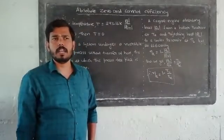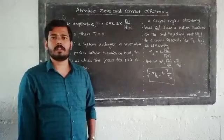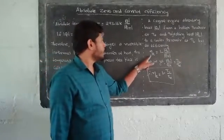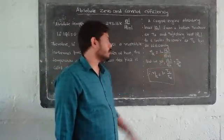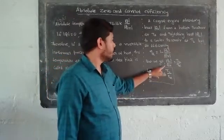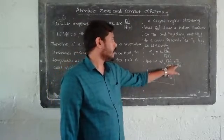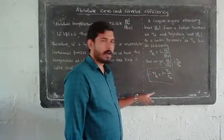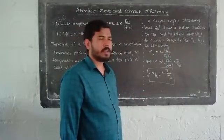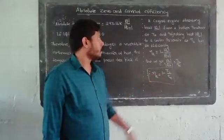The engine absorbs QH amount of heat and produces external work W. The remaining heat QL is rejected to the low temperature reservoir. Let's look at QL by QH equals TL by TH. So efficiency of Carnot engine, eta, is equal to 1 minus TL by TH, where TL is the temperature of the low temperature reservoir and TH is the temperature of the high temperature reservoir.